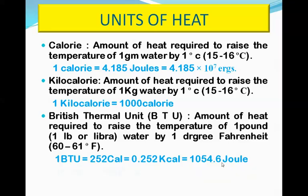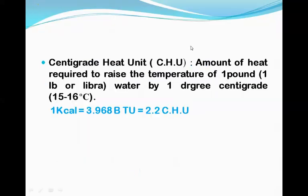One kilocalorie is equal to 3.968 BTU. The CHU (Centigrade Heat Unit) is the amount of heat required to raise the temperature of one pound of water by one degree centigrade, from 15 to 16 degrees centigrade. One kilocalorie = 3.968 BTU = 2.2 CHU. These were the various units in which heat is calculated.